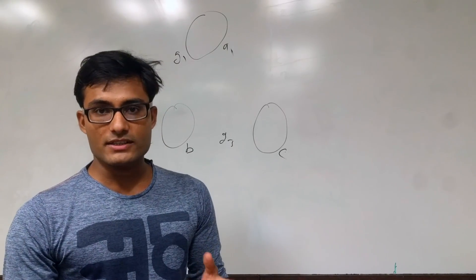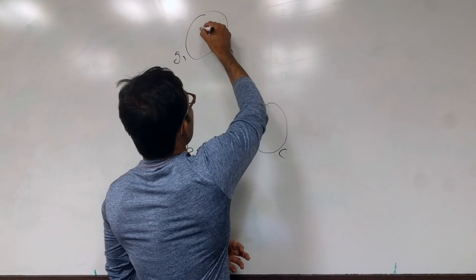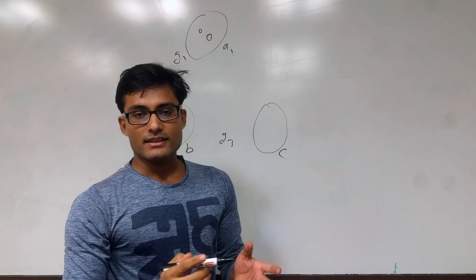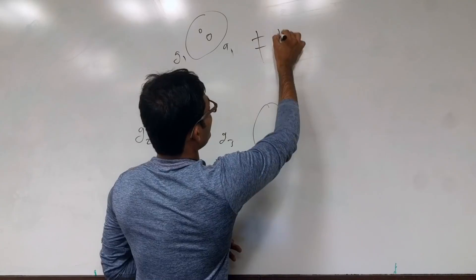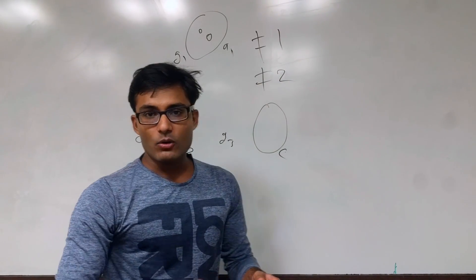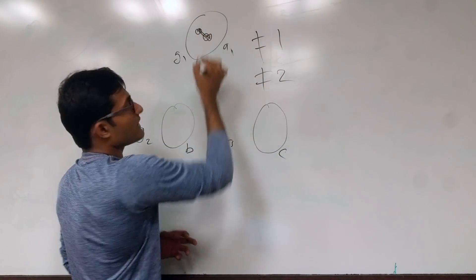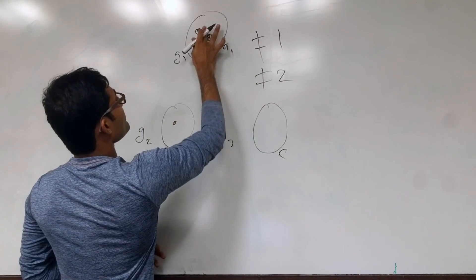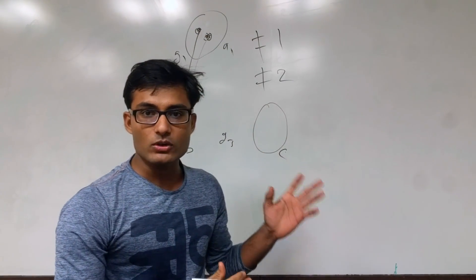The constraint says that any two nodes from the same group should not have distance less than 3. Distance less than 3 means distance equal to 1 or distance equal to 2. Distance equal to 1 means they are directly connected — that situation we have to avoid. Distance equal to 2 means the two nodes are connected through one intermediate node — that situation we also have to avoid.